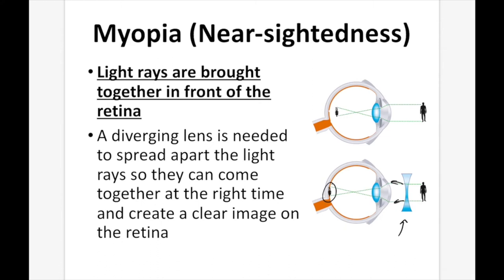How thick or thin that diverging lens needs to be depends on your prescription. If you need more divergence, you get a higher prescription, which diverges the rays further, allowing more time for the image to be created on the retina.